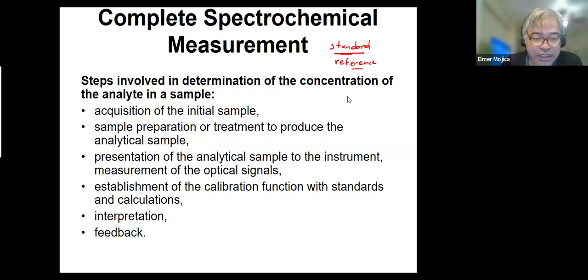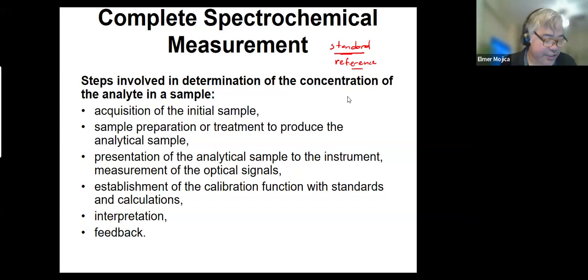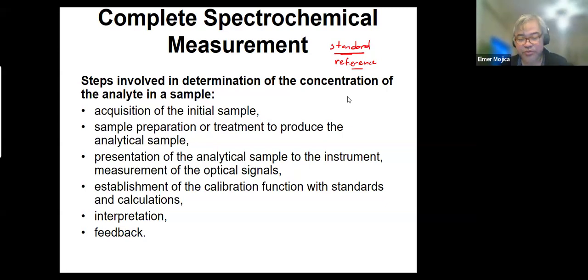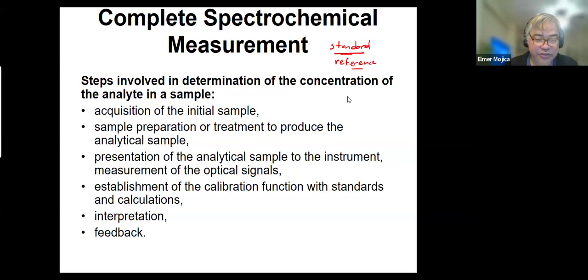Spectrochemical measurement systems differ from, let's say, electrochemical measurement systems in that during the measurement process, the chemical information is carried or encoded as an optical signal.